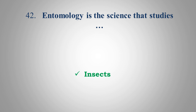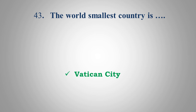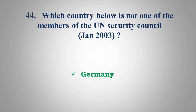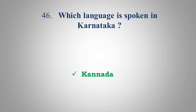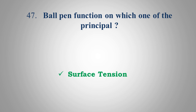Which novel is the Booker Prize winner of Arundhati Roy? Answer: The God of Small Things. The word Satyamev Jayate is taken from? Answer: Mundaka Upanishad. Which lake is used for producing salt? Answer: Sambhar Lake. Who was the first chairman of the Indian Space Research Organization? Answer: Vikram Sarabhai. Which is the smallest state of India by area? Answer: Goa. Ball pen functions on which principle? Answer: Surface Tension.